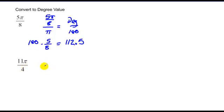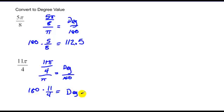We can do the same with the 11 pi over 4, put that over pi, set it equal to degrees over 180. Do the multiplication once again, the pis reduce, so I have 180 times 11 over 4, which is equal to my degree value, which is equal to 495.